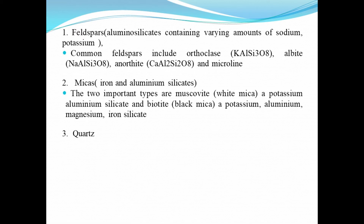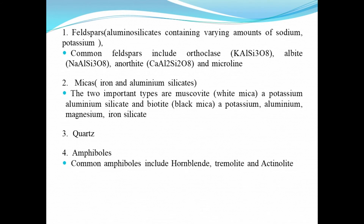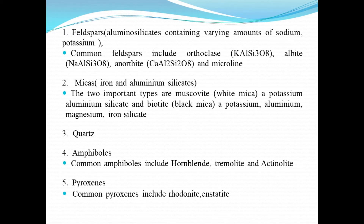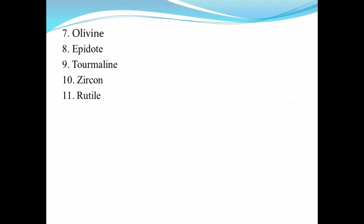The third primary mineral is quartz. The fourth is amphiboles, and common amphiboles include hornblende, tremolite, and actinolite. We also have pyroxenes, and common pyroxenes include rhodonite and enstatite. We also have olivine, epidote, tourmaline, zircon, and rutile as other examples of primary minerals.